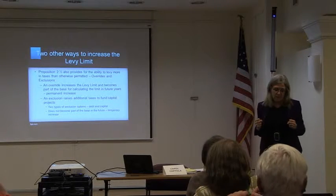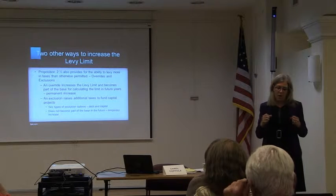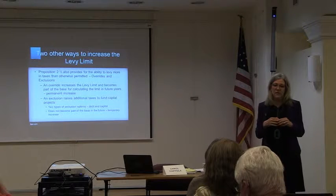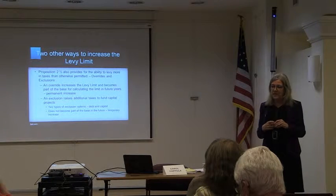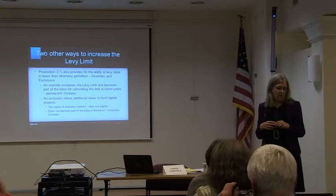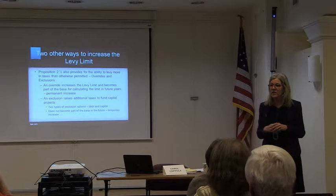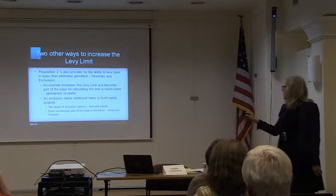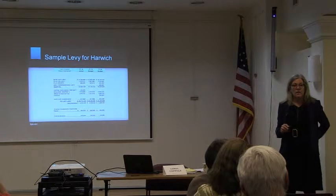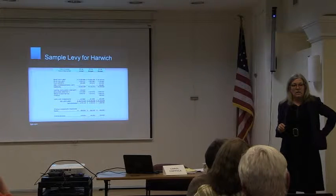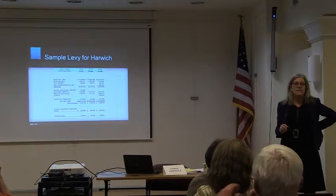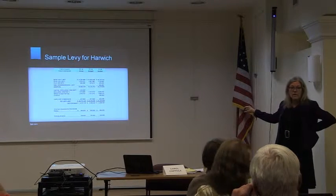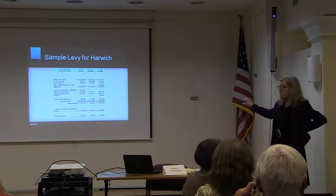A capital exclusion is the other type of temporary increase. For example, if the fire department needs a new pumper and wants to pay for it in one year, they go to town meeting and then to the ballot. If approved, it's a temporary one-year tax increase. In theory, taxes go up slightly that year to pay for the pumper, and the next year they come back down — though there will always be something else.